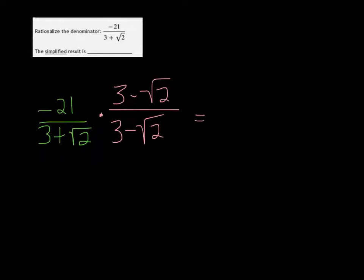So we get negative 21 times 3 is negative 63, and then plus 21 root 2, when we multiply in the top.